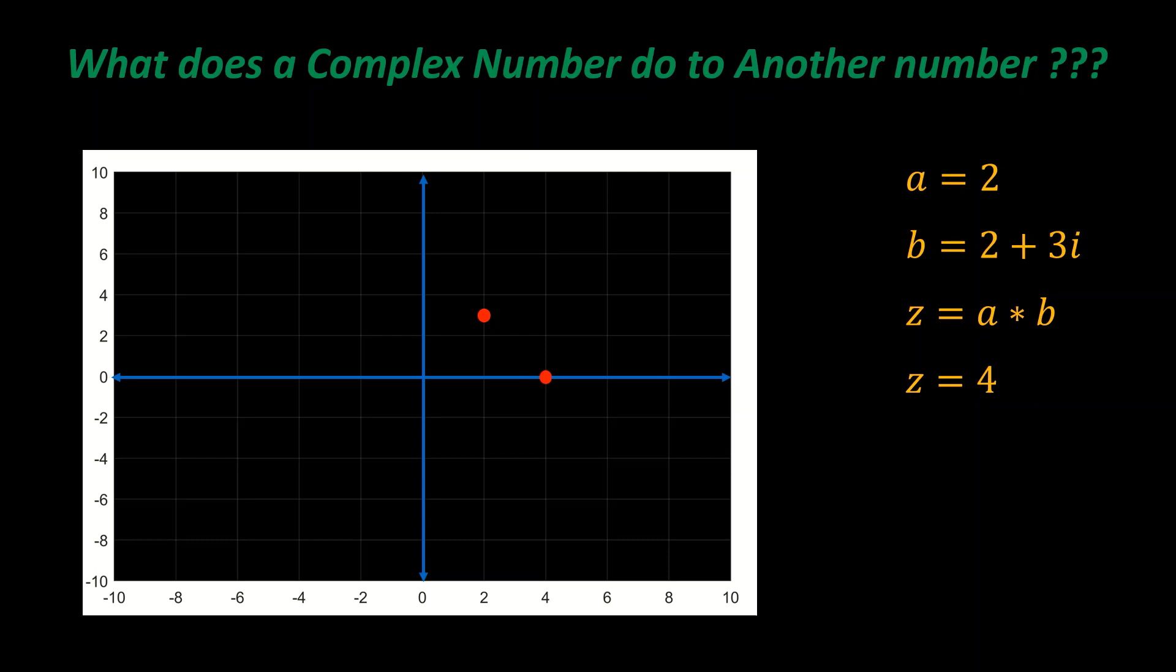When we multiply both numbers, the real number will be multiplied and then the imaginary number, so we get 4 plus 6i. Here you won't get a good intuition of what's going on because this is the same thing we do in two-dimensional or three-dimensional vectors.